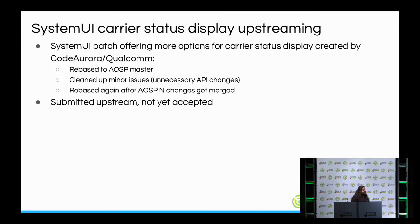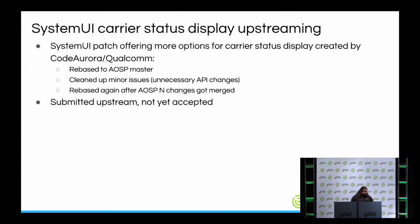The system UI carrier status display is a patch that comes out of the Qualcomm tree. It essentially modifies the AOSP code that displays the carrier status — where you see one bar to four bars — so that carriers can customize it. We rebased it to AOSP master; the patch we received was based on Android 5. We cleaned up a couple of minor issues, removed unnecessary API changes, and rebased it again when AOSP N was released. From our view it looks good, but it's not yet accepted upstream.